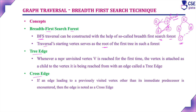A tree edge is formed whenever a new unvisited vertex is reached for the first time — this vertex is attached as a child to the vertex it was reached from. For example, vertex A is the source; its adjacent vertices are B and D. B is reached for the first time from A, so A-to-B is a tree edge. Likewise, A-to-D, B-to-C are all tree edges. Whenever you find an unvisited vertex adjacent to the currently visiting vertex for the first time, that edge is a tree edge.